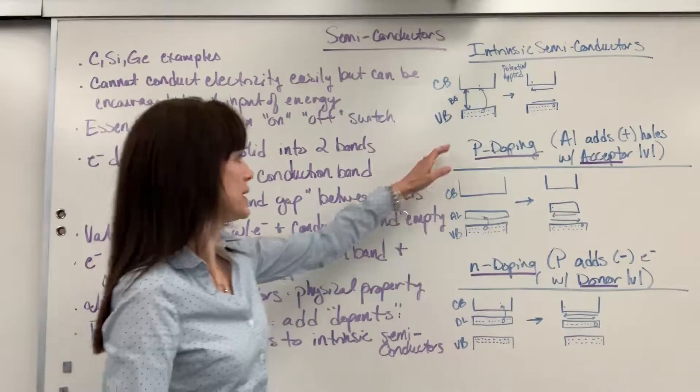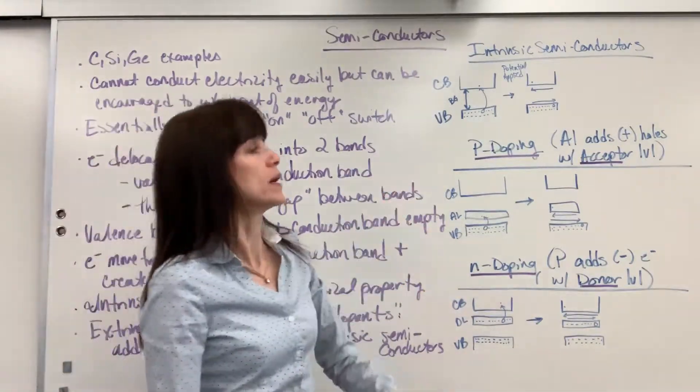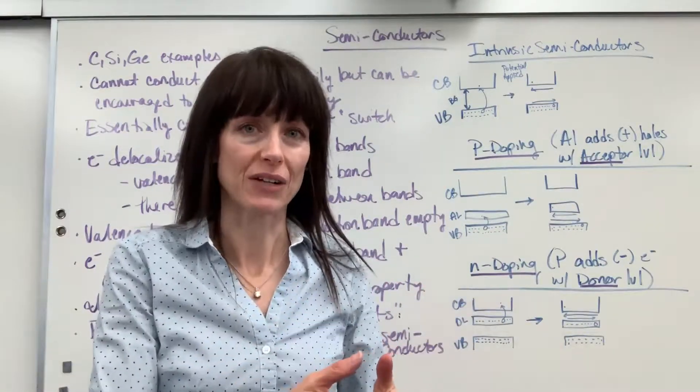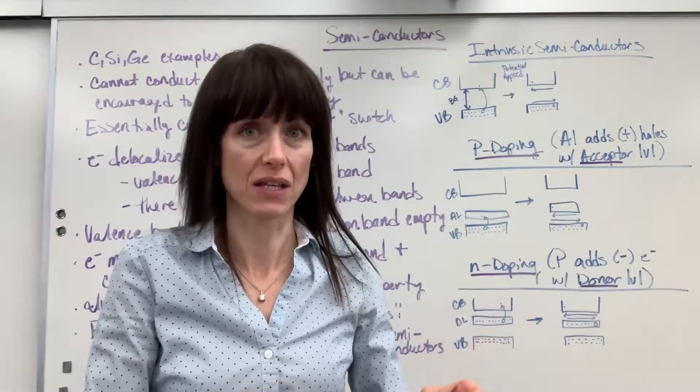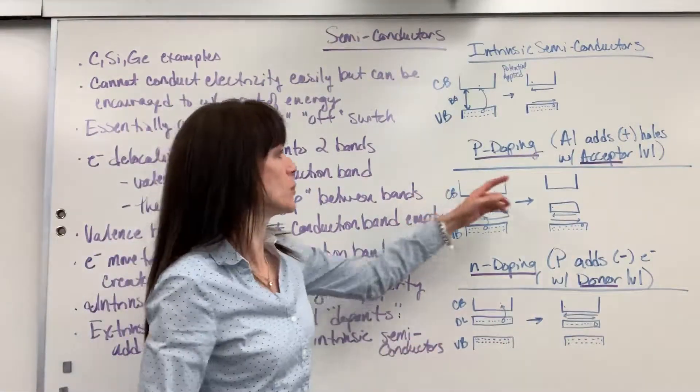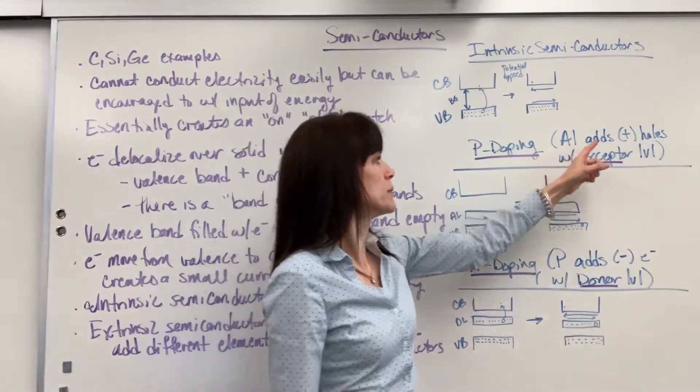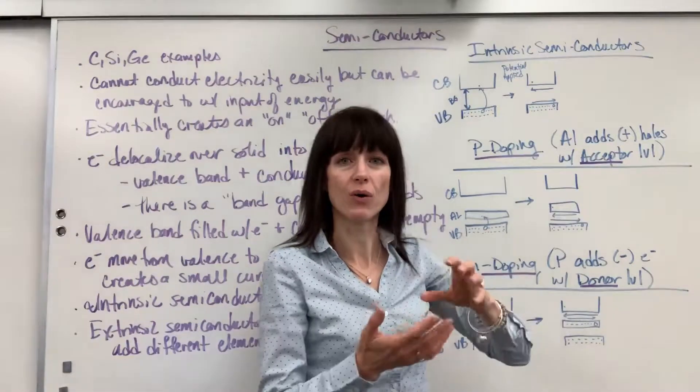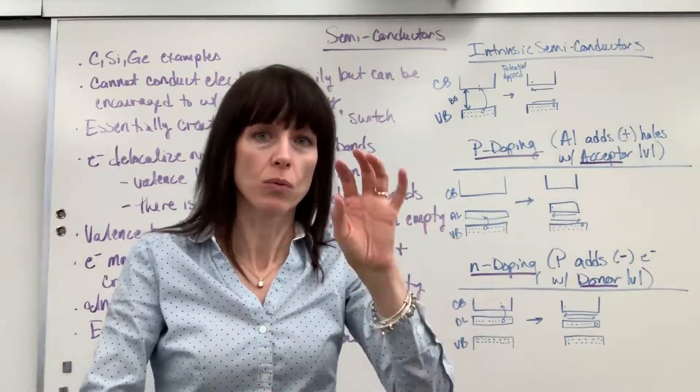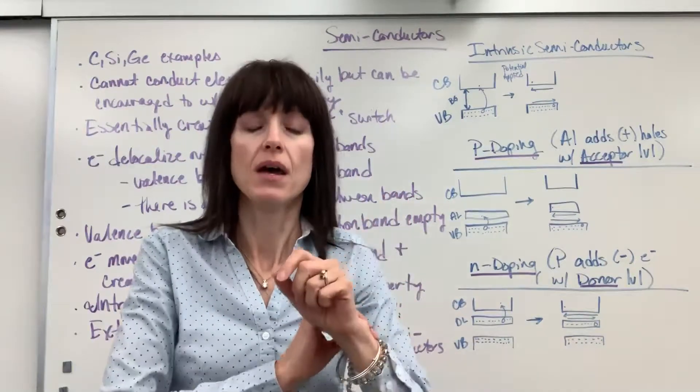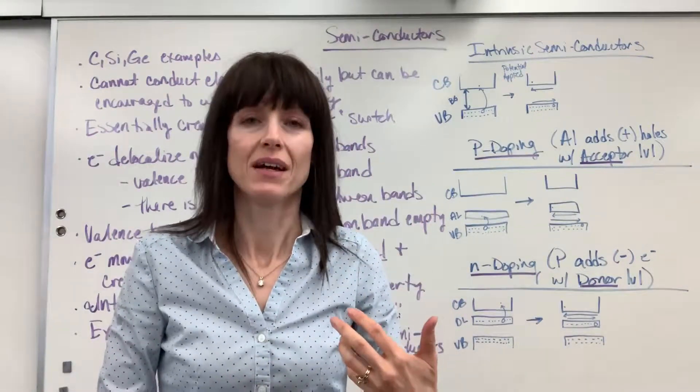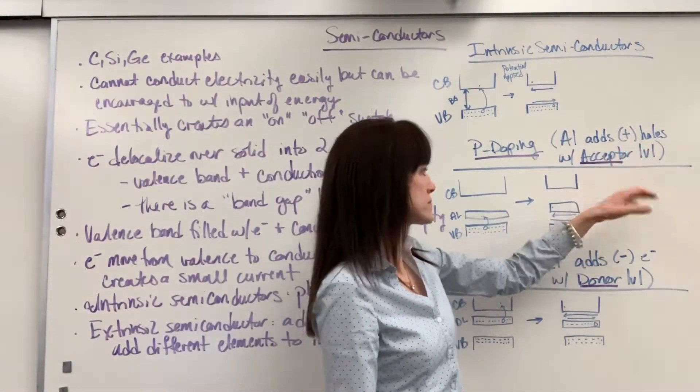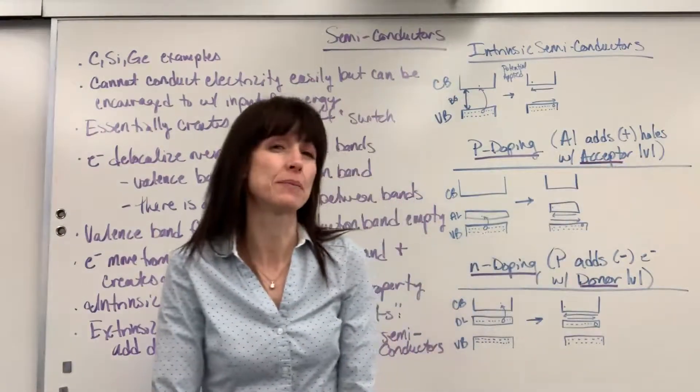We are going to have p-doping and n-doping. In p-doping, we're going to add an element that doesn't have four valence electrons. In fact, it has less valence electrons. So a really, really good example of a p-doping is aluminum. So, because aluminum only has three valence electrons, in essence, it adds these positive holes. If you put the aluminum, maybe one aluminum with four silicon atoms, the aluminum has one less valence electron, and so that's going to create that positive hole. This, in essence, creates what we call an acceptor level.